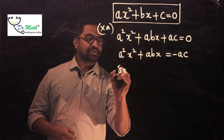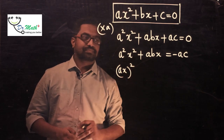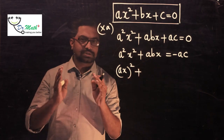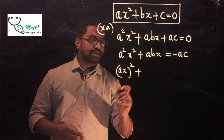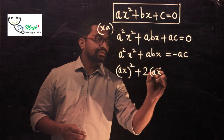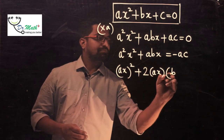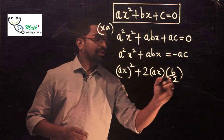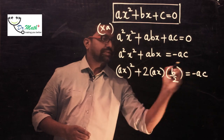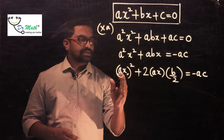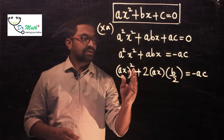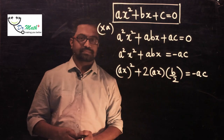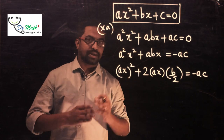Now, a²x² is a perfect square — I write it as (ax)². Then for the abx term, I make a small adjustment and write it as 2·(ax)·(b/2), which equals −ac. This now looks like a² + 2ab form — specifically a square plus two times a number and one more number.